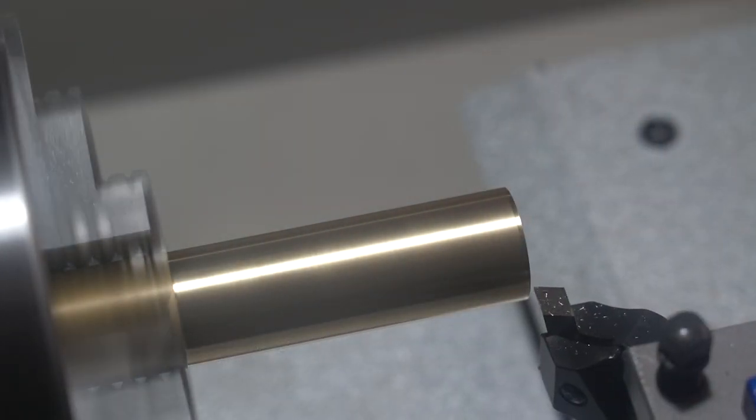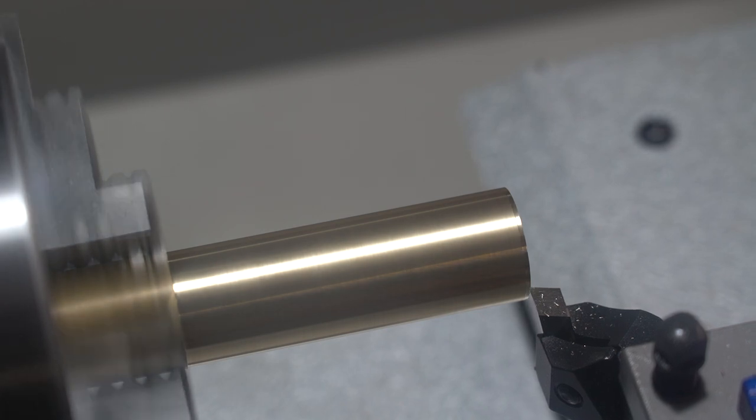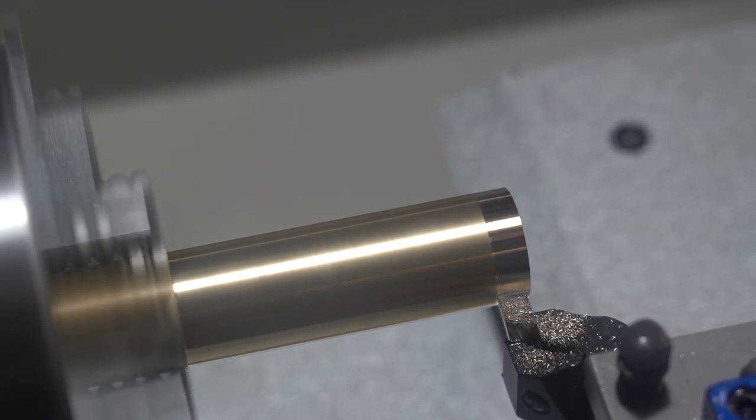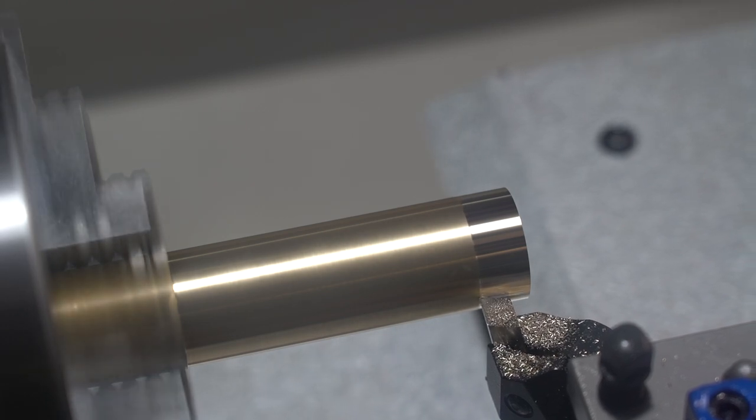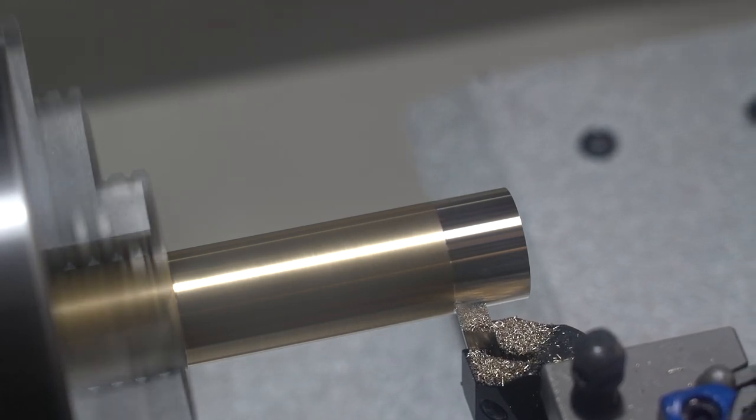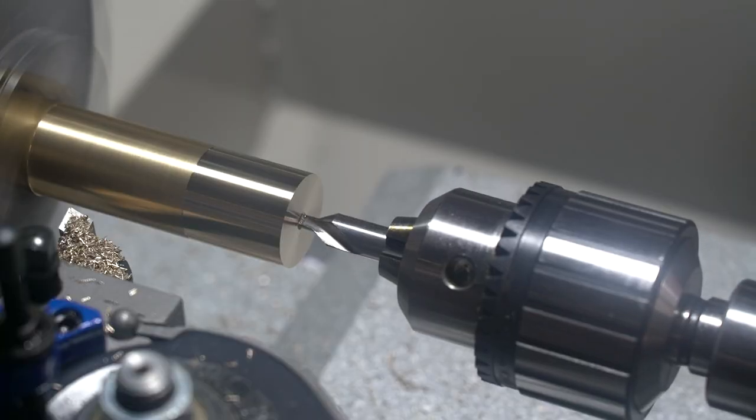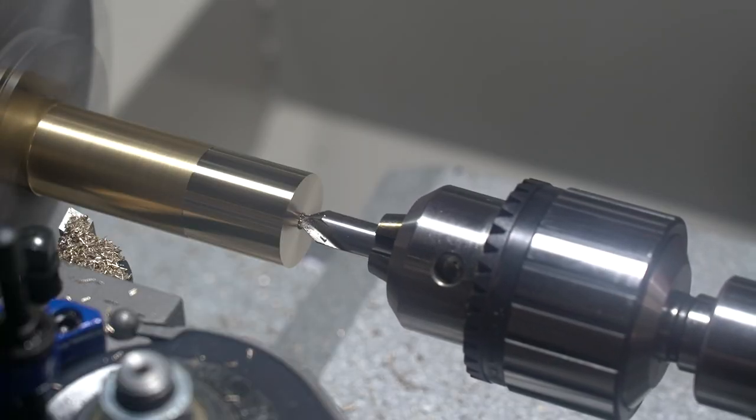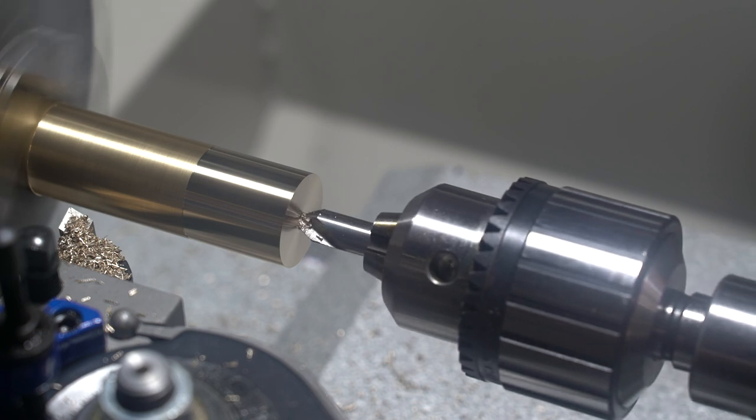I decided to make my own bolt so here I'm going to knurl a piece of brass then tap it to make some knobs. One knob will be the bolt head and the other will be used as a locking nut. As you're about to see my first attempt at knurling didn't quite turn out as well as I had hoped so I parted it off and did it again.